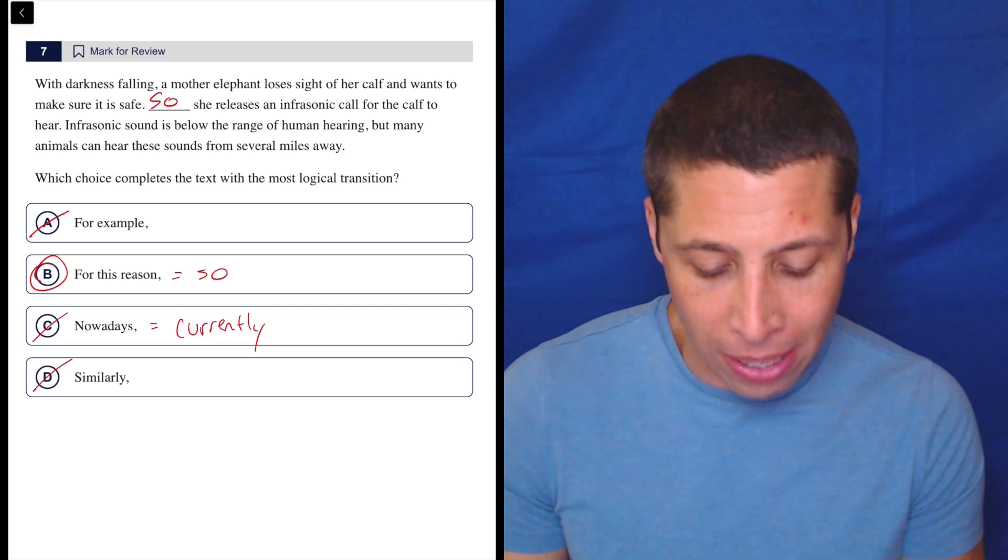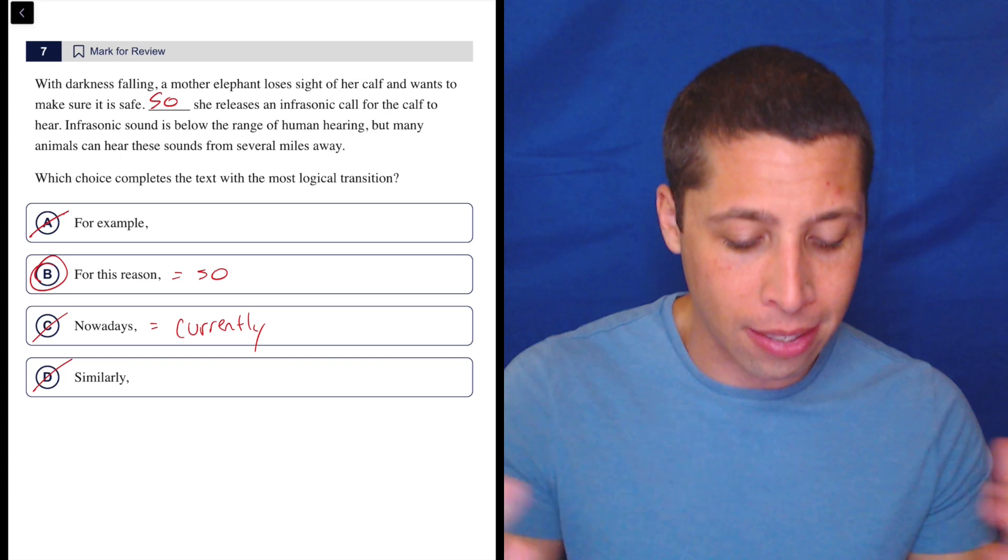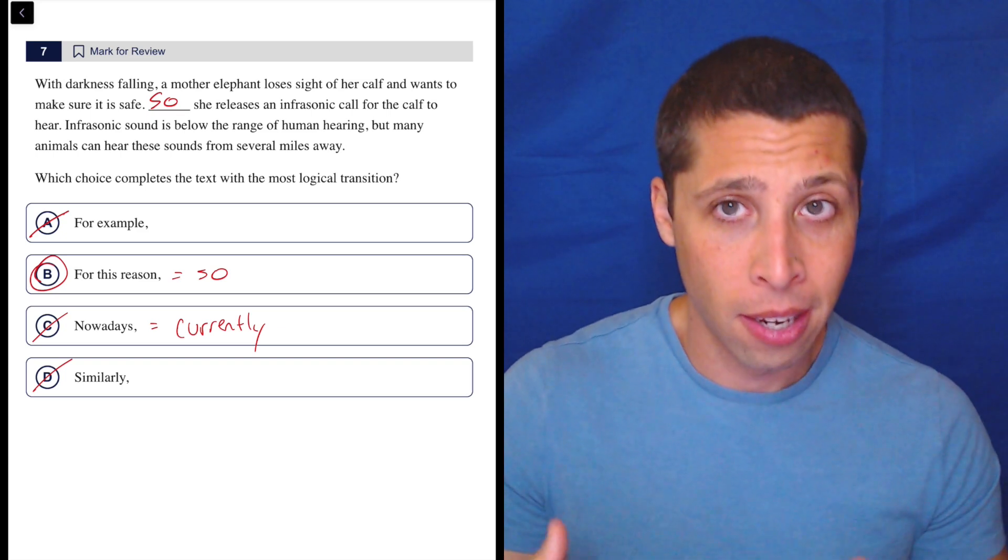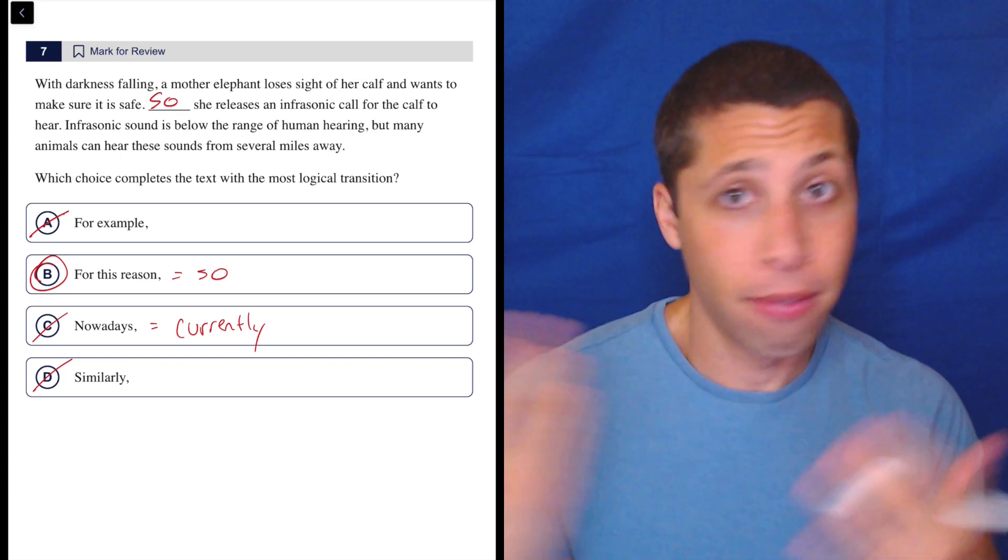And similarly is for when we make a comparison. We're not doing that here. Again, it's two kind of steps in a process. They lost the calf, so they call for the calf. Very simple.